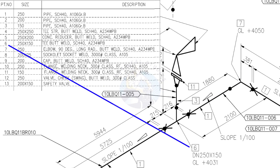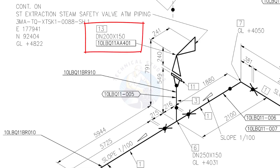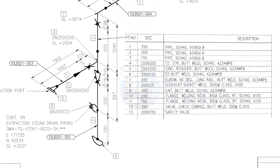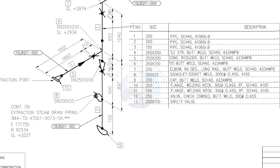Item number 6 is a reducing T. Item number 13 is a safety relief valve — being familiar with valve symbols will be a big advantage for you. Item number 4 is a straight T. Item number 5 is a concentric reducer. Item number 8 is a socket weld branch. Item number 9 is a cap.